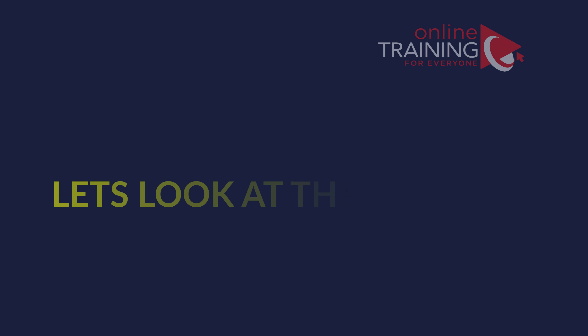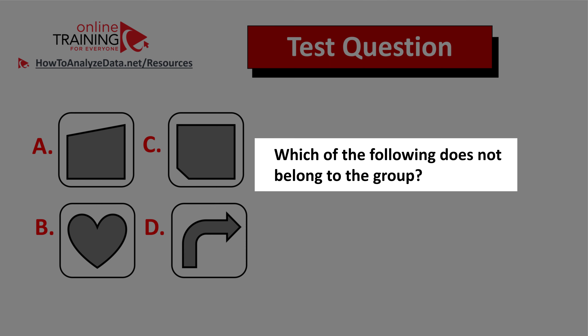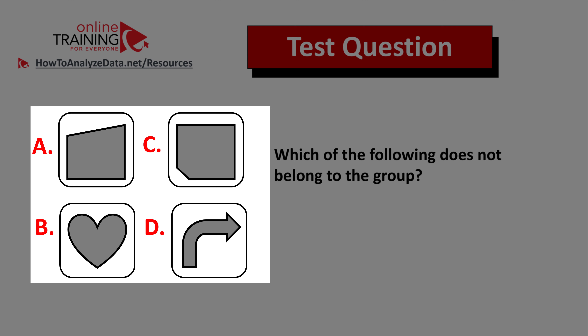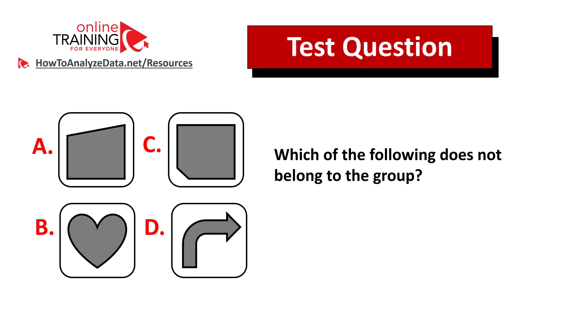Here's another question for you to try on your own: which of the following does not belong to the group? You're presented with four different rounded squares, each with a shape inside — choices A, B, C, and D. My tip: always look for patterns. Give yourself 10 to 15 seconds, post your answer in the comment section for feedback, and subscribe to see the detailed answer in future videos.